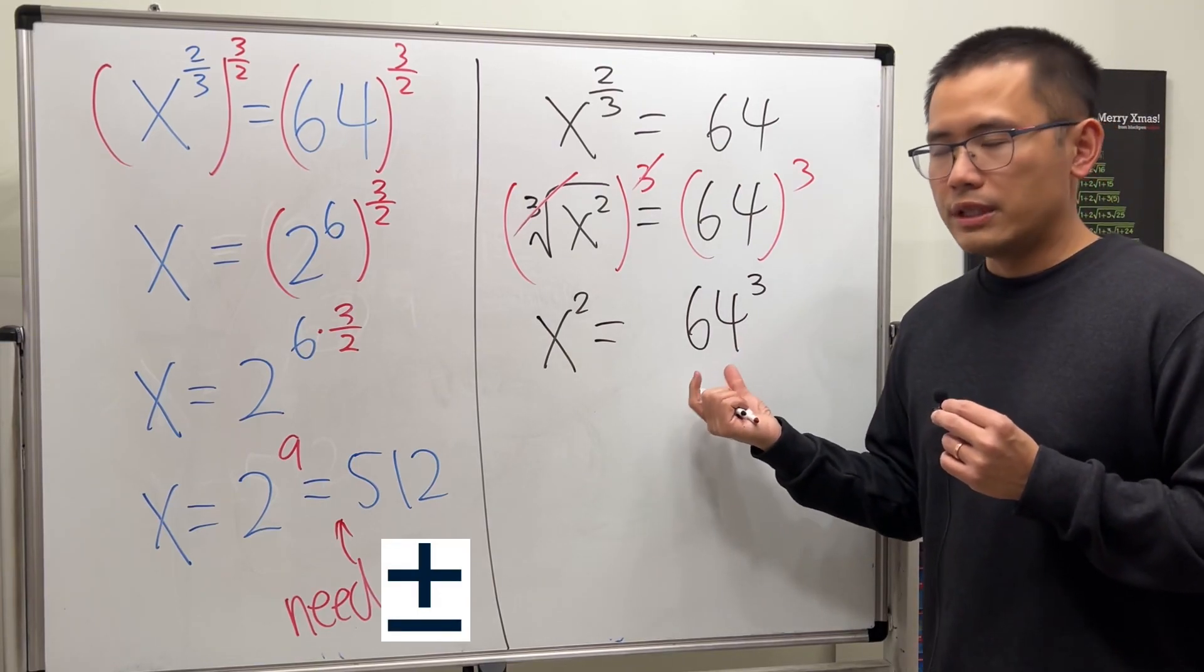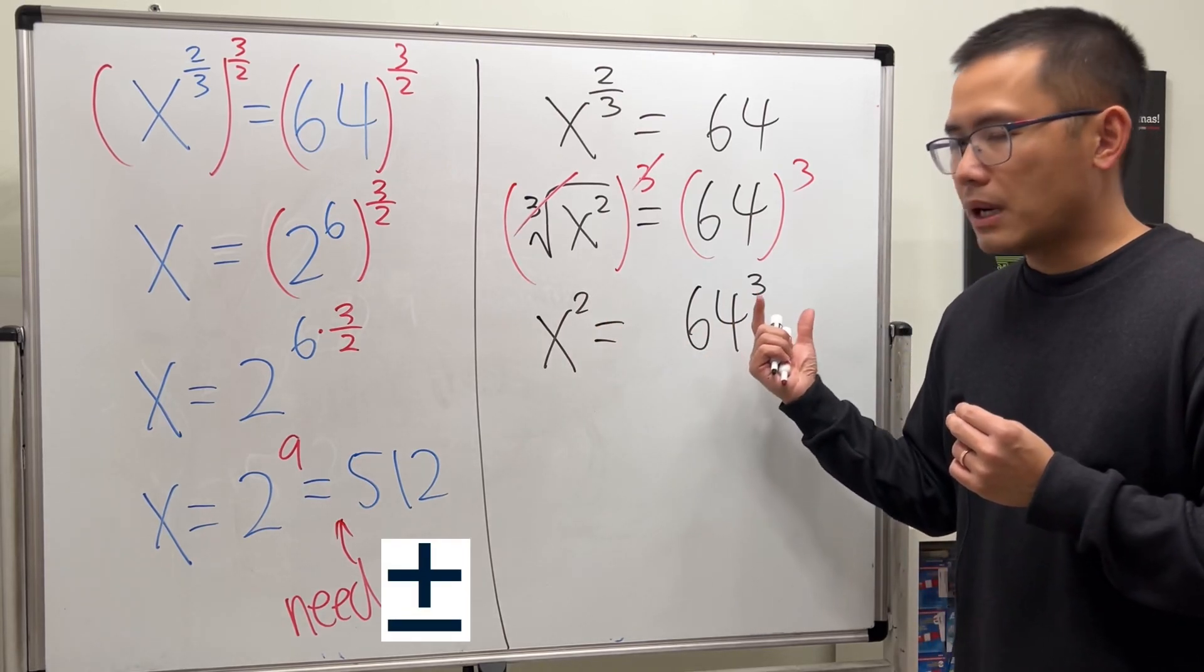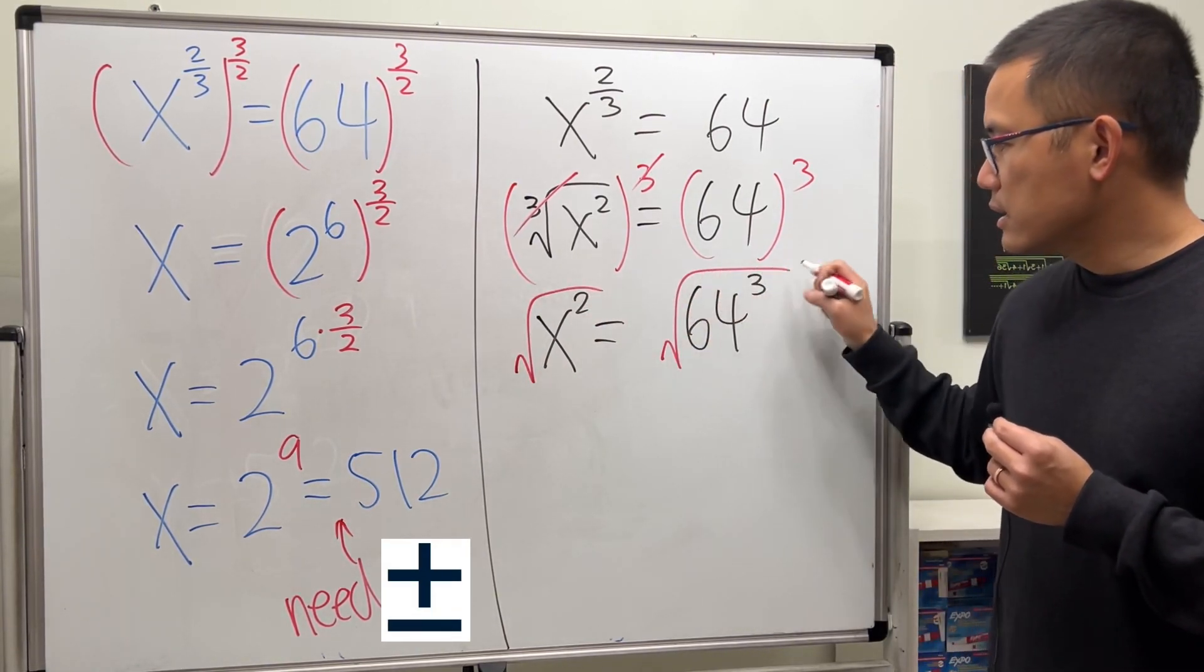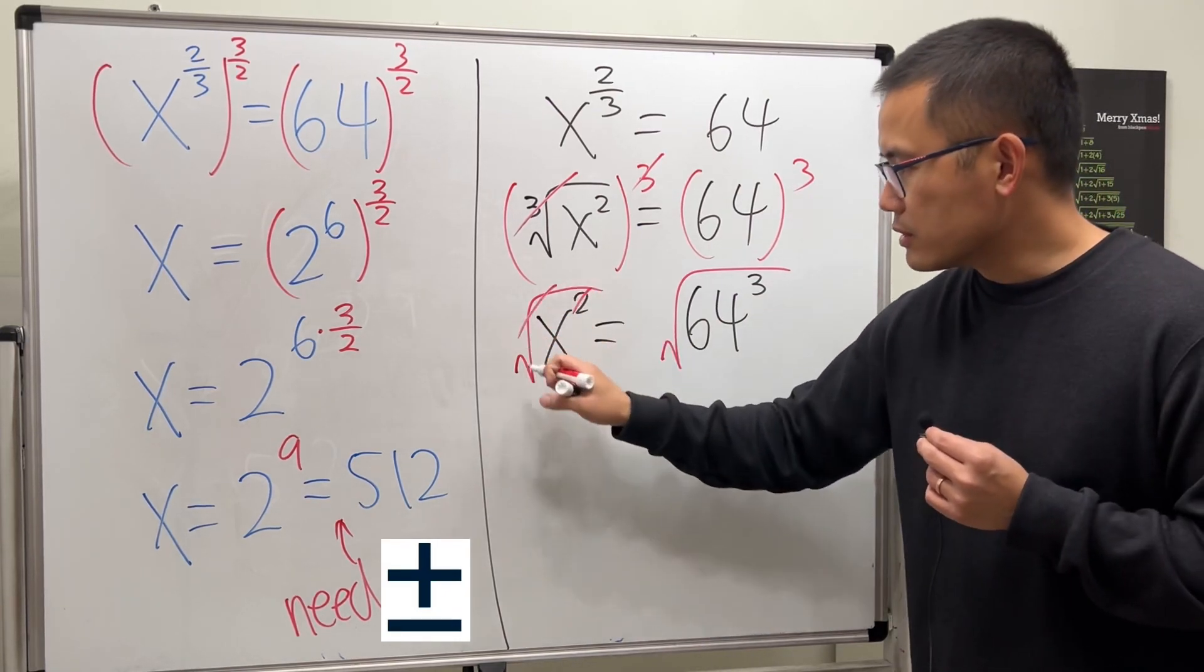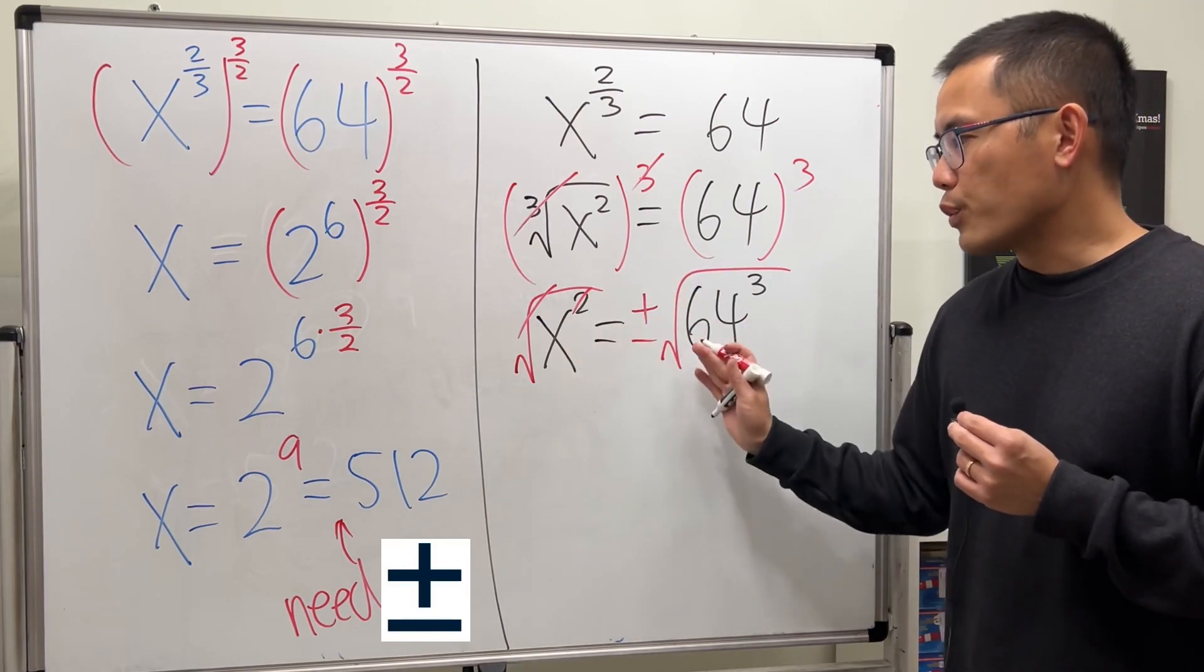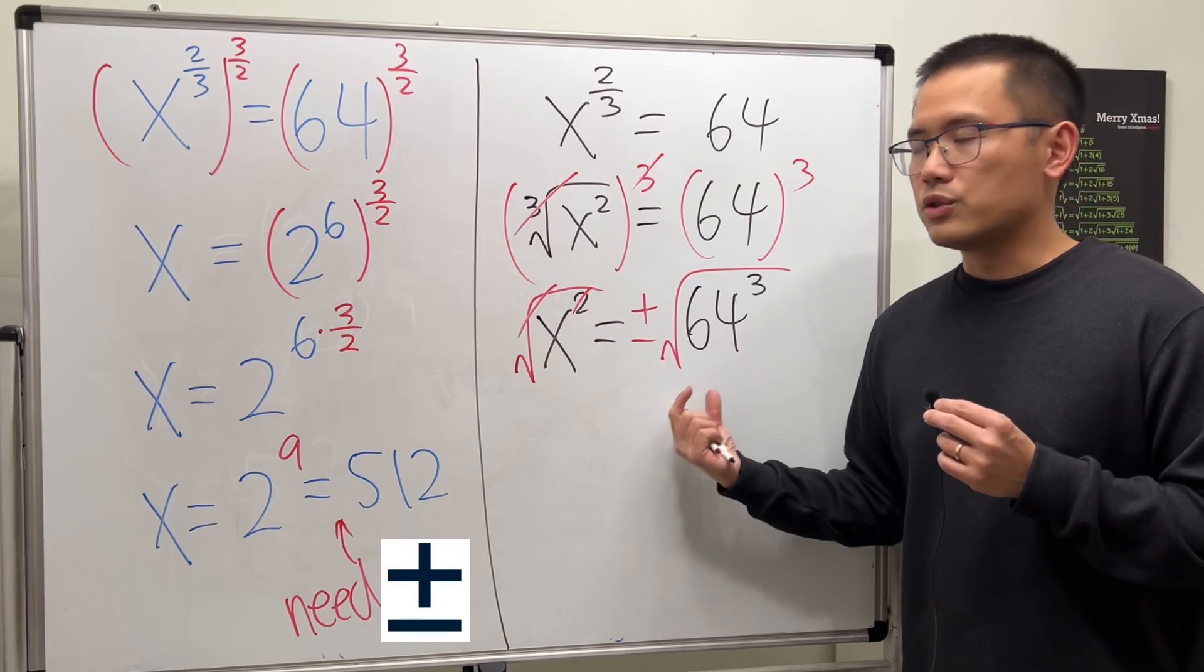Now when we have x squared equals a positive number, yes, we can take the square root of both sides and this and that will cancel. But you just have to remember, you put a plus or minus. Whenever you solve an equation, when you take the square root of both sides, don't forget the negative version will also work.